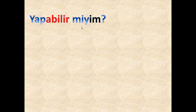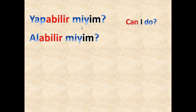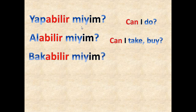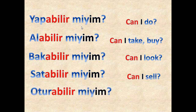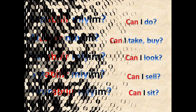Here we have the question form: 'Yapabilir miyim?' — can I do? 'Alabilir miyim?' — can I take, can I buy? 'Bakabilir miyim?' — can I look, can I take a look? 'Satabilir miyim?' — can I sell? 'Oturabilir miyim?' — can I sit? I'll read them once more: yapabilir miyim, alabilir miyim, bakabilir miyim, satabilir miyim, oturabilir miyim.